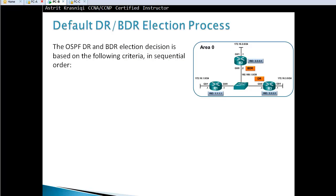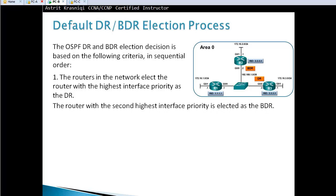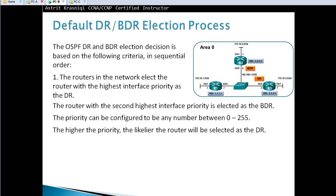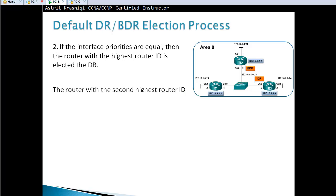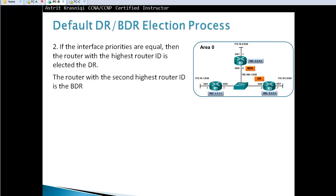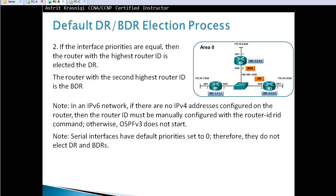The OSPF DR and BDR election decision is based on the following criteria in sequential order. First, the router with the highest interface priority wins as DR; second highest becomes BDR. Priority can be any number from 0 to 255 — zero means not taking part, 255 is highest, default is 1. If priority is equal, the highest router ID breaks the tie. In IPv6 networks without any IPv4 address configured, the router ID must be manually configured or OSPFv3 will not start. Serial interfaces have a default priority of 0 and therefore do not elect a DR or BDR.